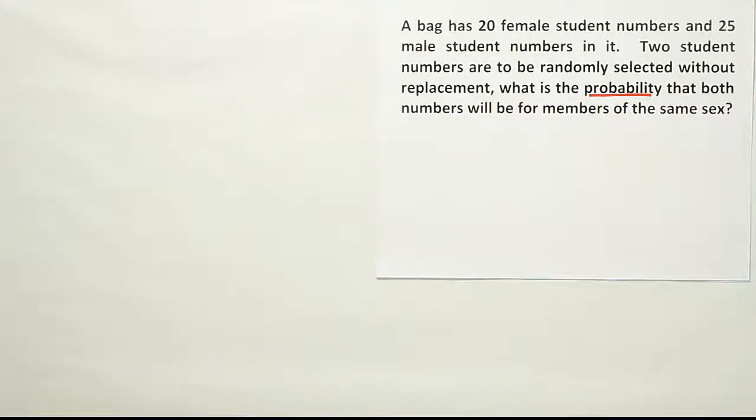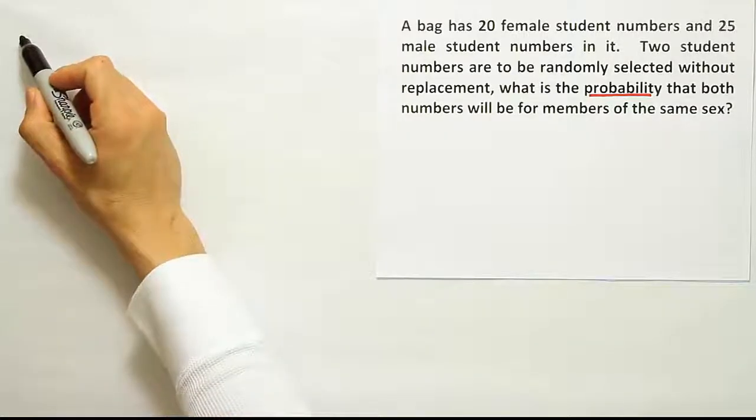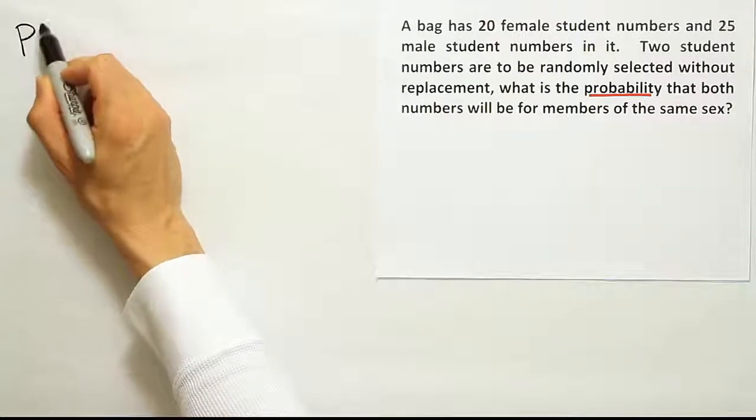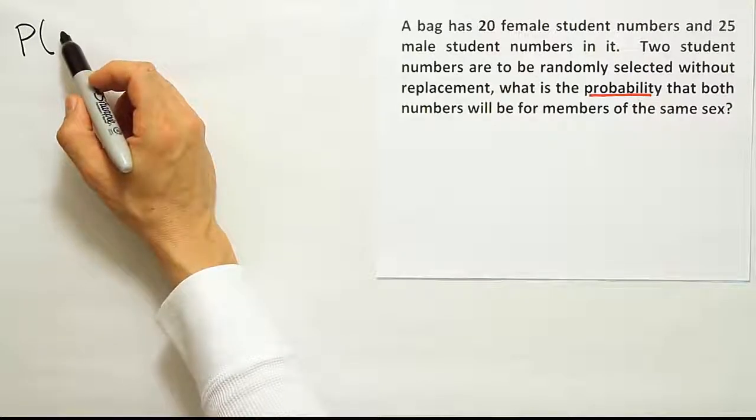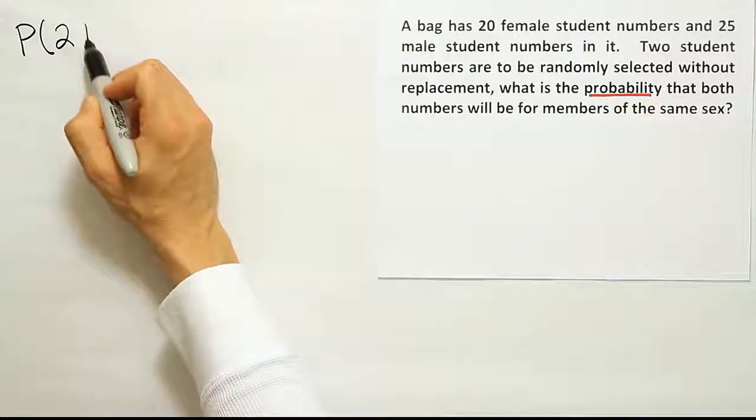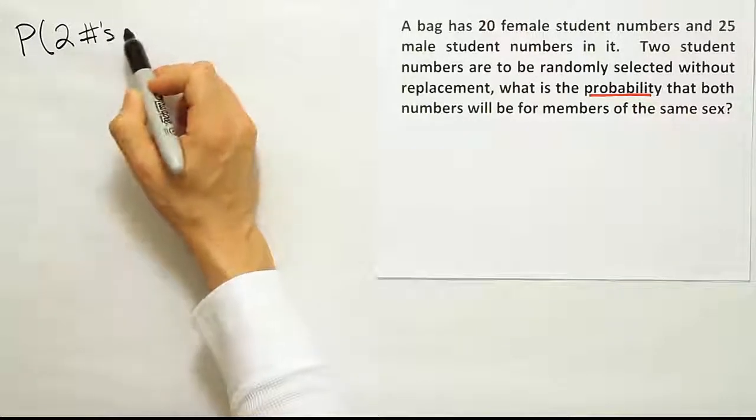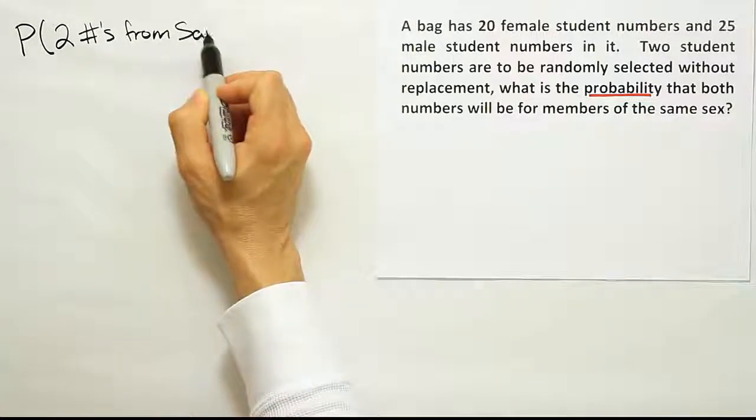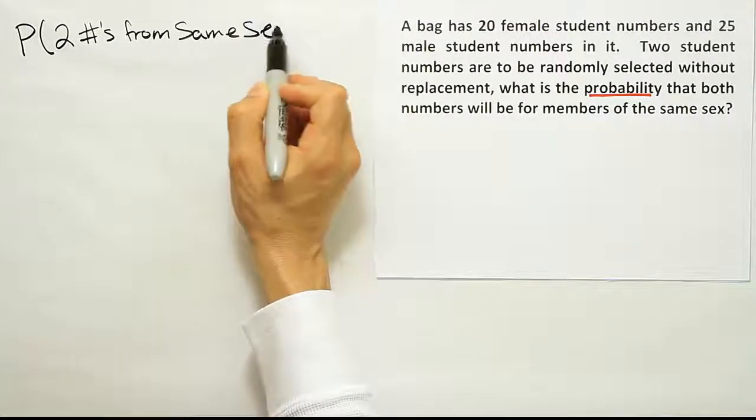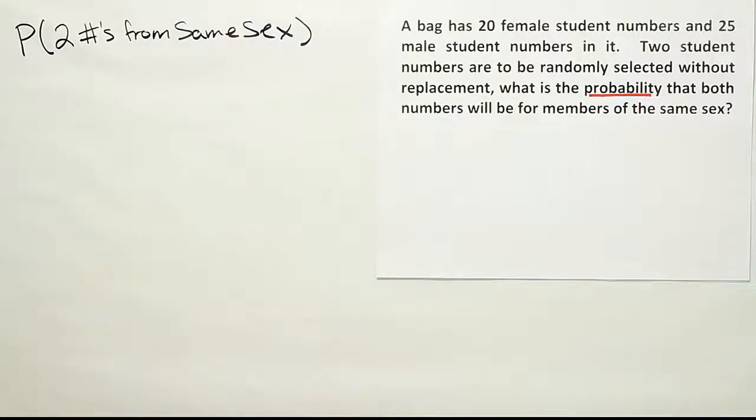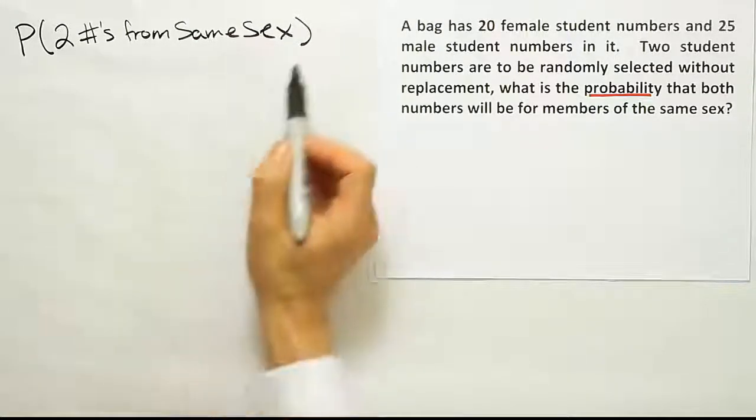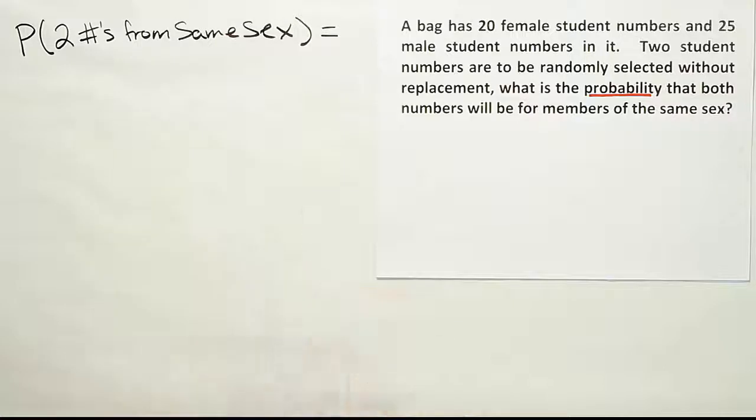And, you know, to start out then I would normally say, okay, we're gonna write a statement then, right? The probability that I get two numbers from the same sex. Two numbers from the same sex. Okay, so that'd be a good way to start out the problem, just expressing what the problem is actually asking for, right?